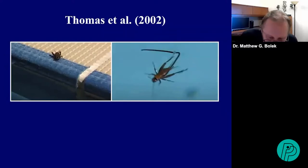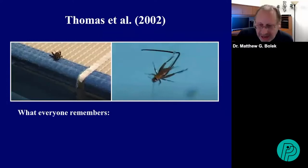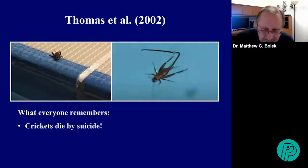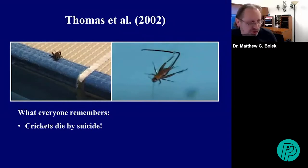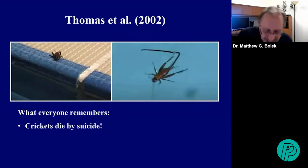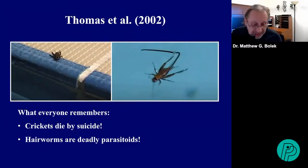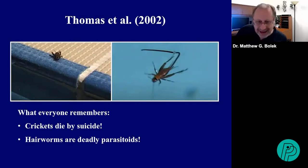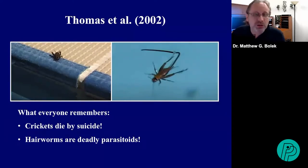In a typical life cycle of a horsehair worm, the infected insect must enter water to release the free-living adult worms — if they come out on land, those worms will die and never be able to reproduce. Field observations suggest that infected insects may deliberately enter water. One of the most famous early studies by Tomas and Schmidt-Risa demonstrated that infected crickets actively jumped into a swimming pool more frequently than uninfected crickets, but in the process drowned. This led to the common dogma that crickets commit suicide and that horsehair worms are deadly parasitoids — organisms that kill or castrate their host.